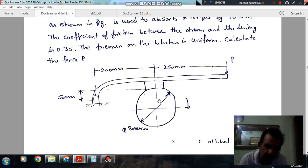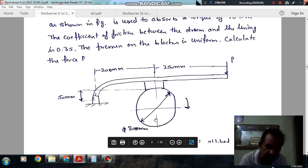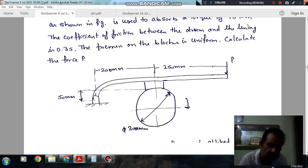This is the brake. This is the drum and its diameter is 300 mm. It is rotating in clockwise direction. This distance is 250 mm, this is 200 mm, and this is 50 mm.